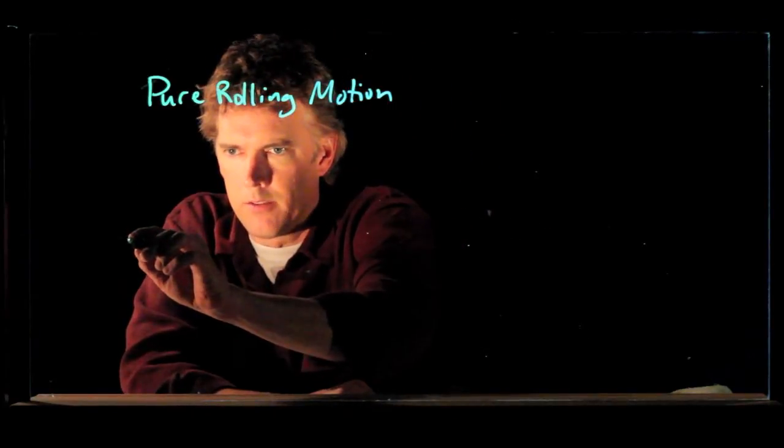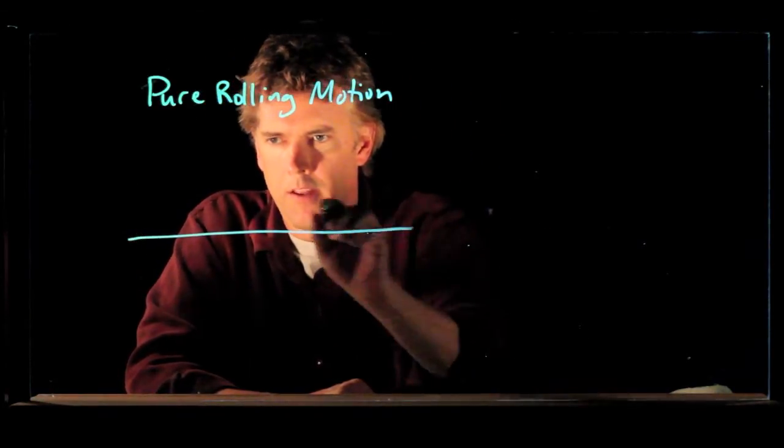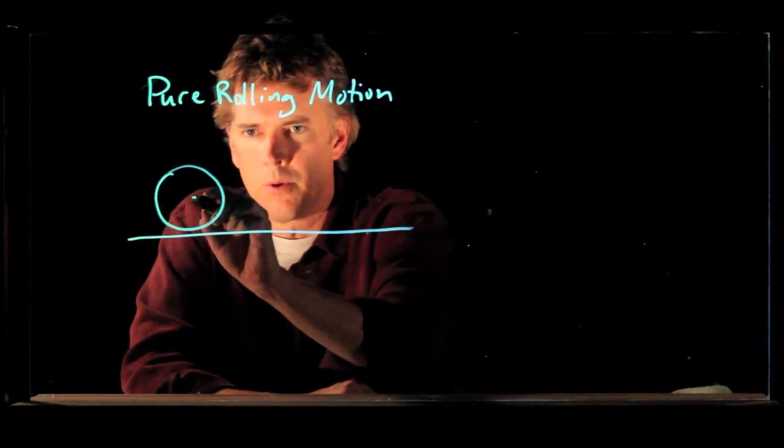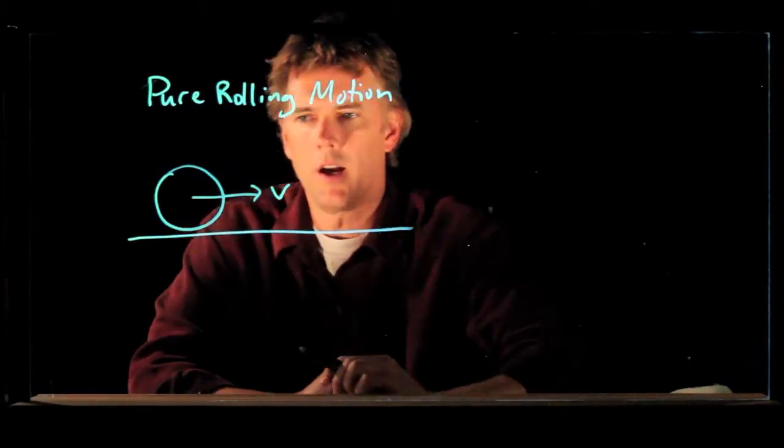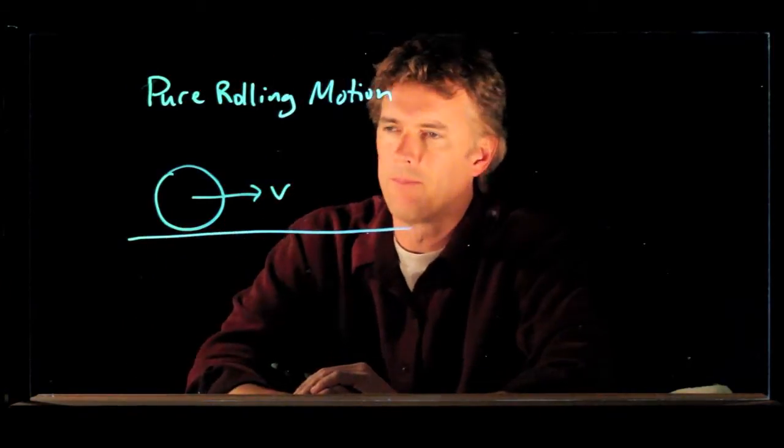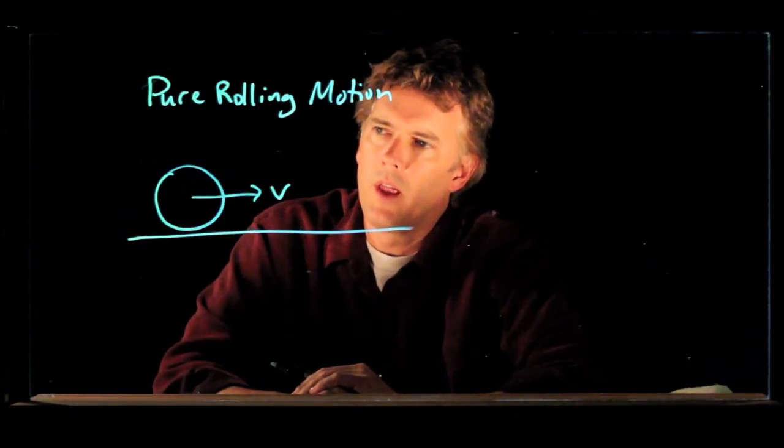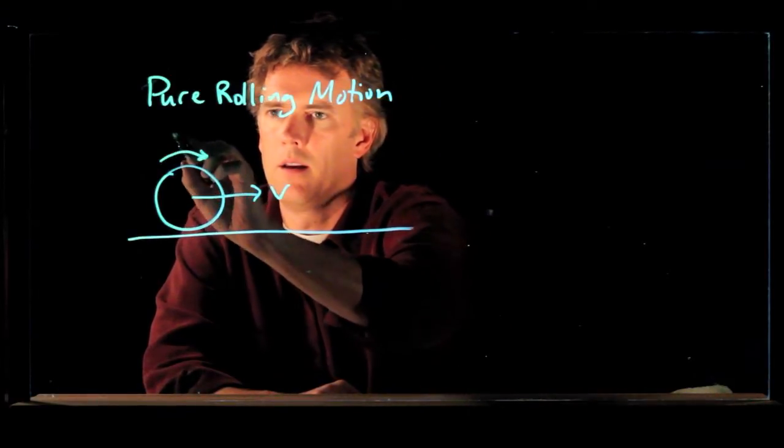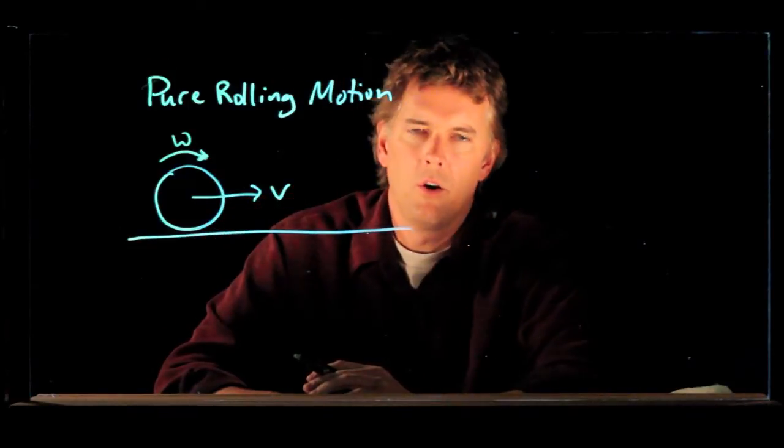And so the idea is this. Let's take a wheel and let's roll it along and it's moving along at speed v. We know that as it's rolling it also has rotational speed, angular speed, omega.